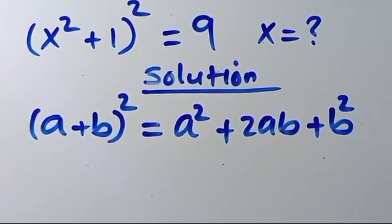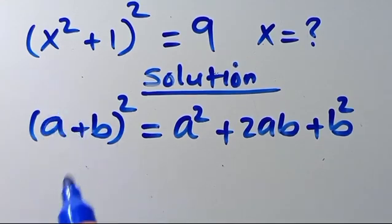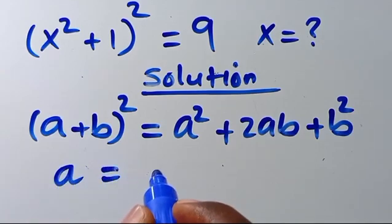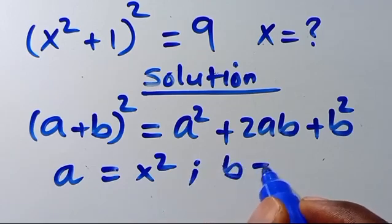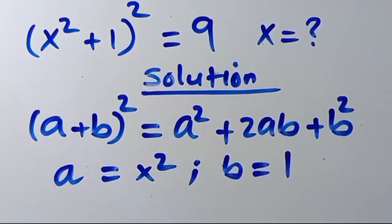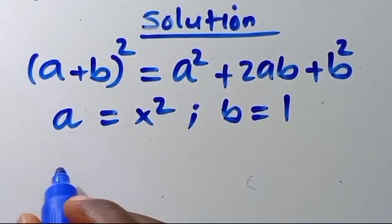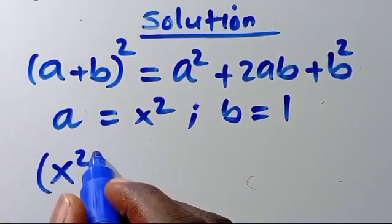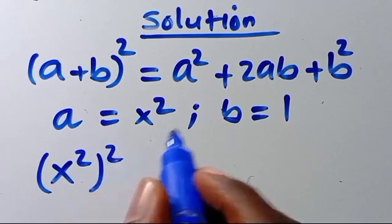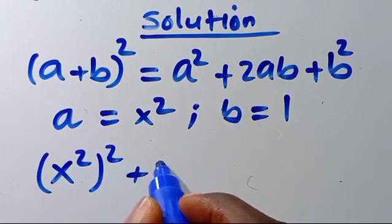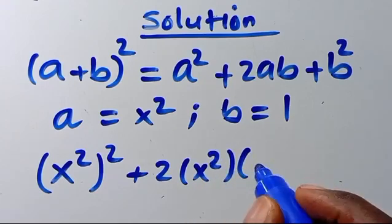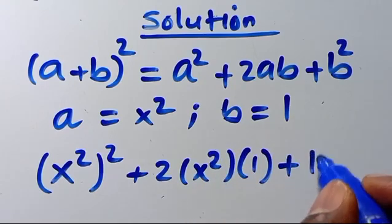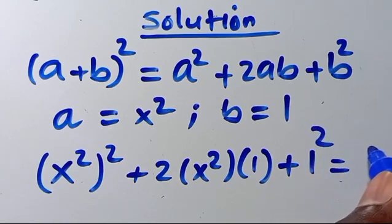So from here, when we make the comparison, A will be x squared and B will be 1. So when we substitute, we are going to have x squared to the power of 2, plus 2 times x squared times 1, plus 1 squared, everything equals 9.